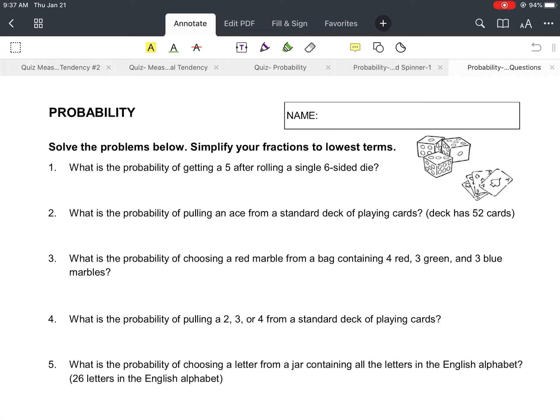Okay, so we're going to work through about five or six of these problems together, and then the rest you'll complete on your own. It says solve the problems below, simplify your fractions to the lowest terms if possible. So what these are, are different probability scenarios and we're supposed to figure up what the outcome of that scenario is supposed to be.